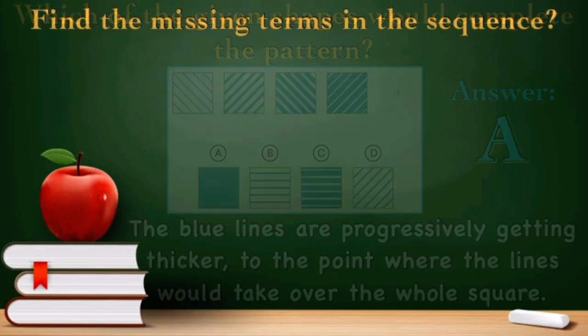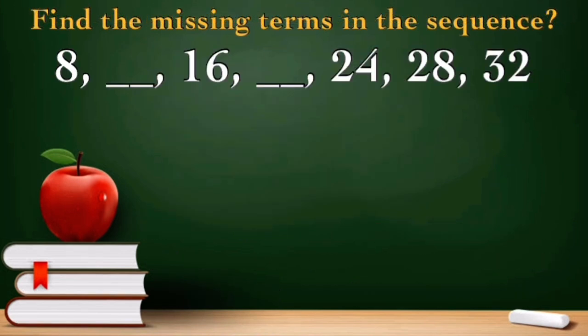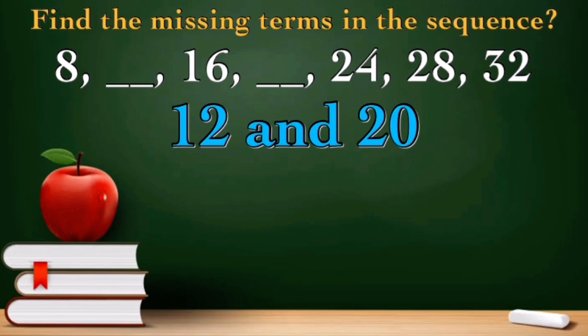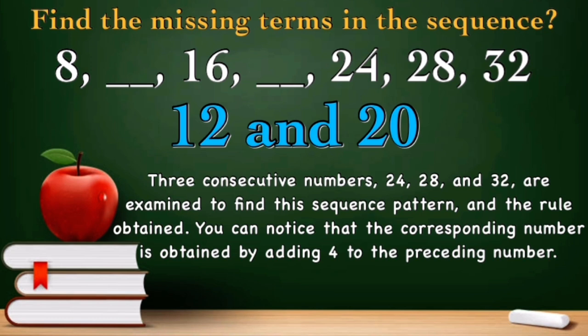Now let us have example number two: find the missing terms in the sequence 8, blank, 16, blank, 24, 28, and 32. The answer is 12 and 20. Very good. Three consecutive numbers 24, 28, and 32 are examined to find the sequence pattern. You can notice that the corresponding number is obtained by adding 4 to the preceding number. Therefore, the missing terms are 8 plus 4 is 12, and 16 plus 4 is 20.